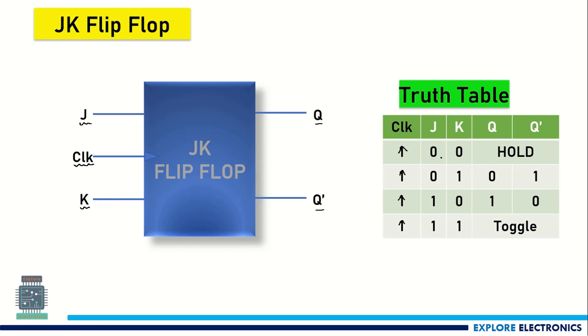When J is 0 and K is 0, the output of the flip-flop will be in hold state, meaning Q will be same as Q and Q-bar will be same as Q-bar. It will be holding its previous state as output.